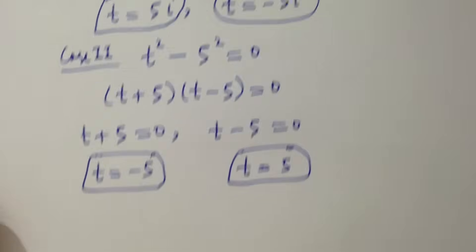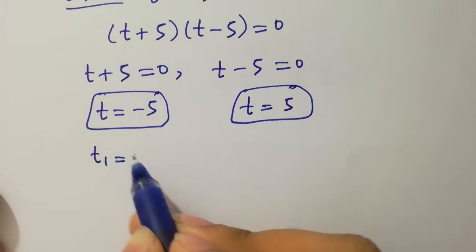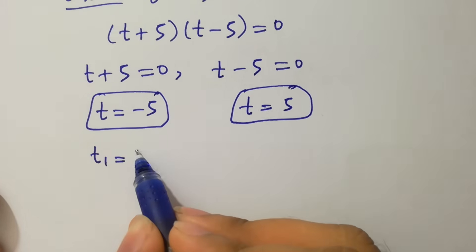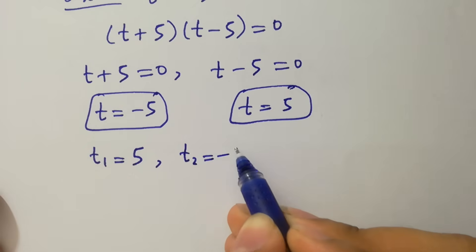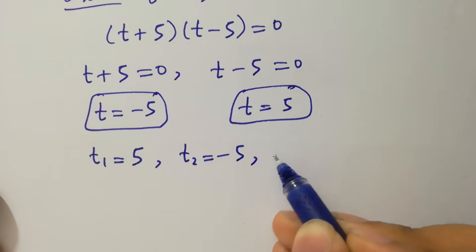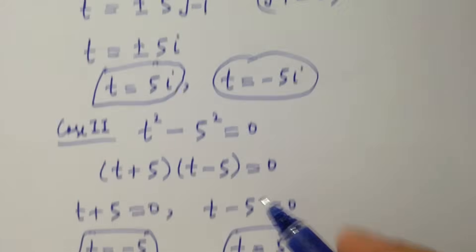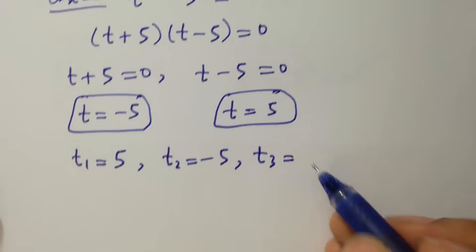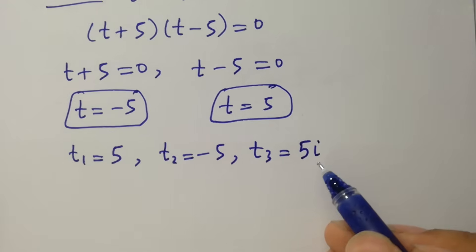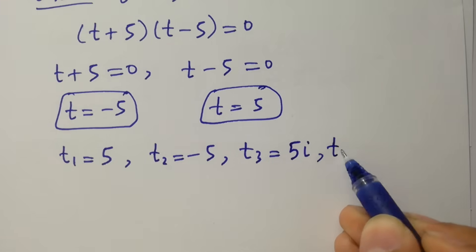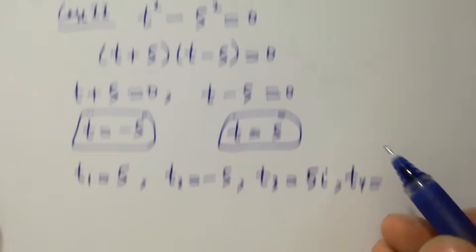So we have four values: t1 equal to 5i, t2 equal to minus 5i, t3 equal to 5, and t4 equal to minus 5.